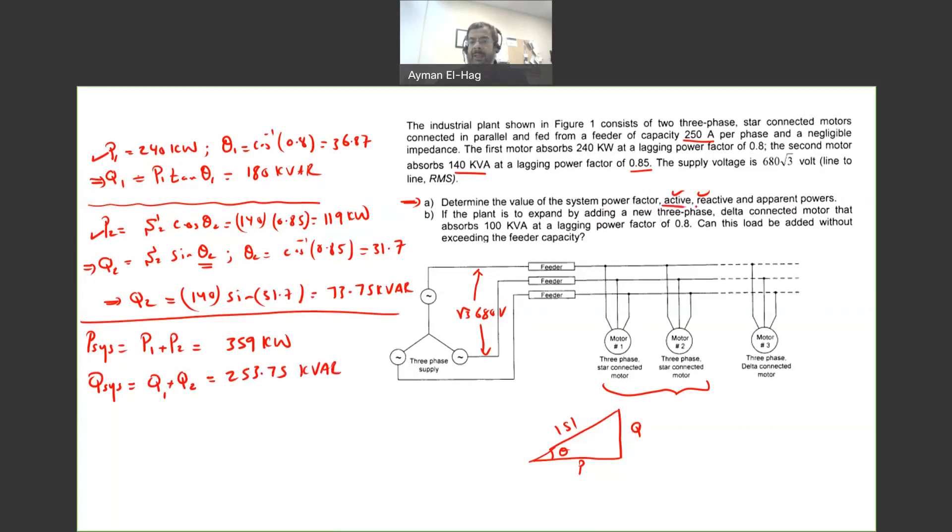Now we are done with these. Now we can find the apparent power S of the system is equal to P of the system squared plus Q of the system squared. And this will give me a total of 439.6 kVA.